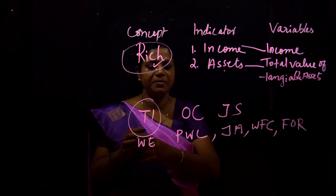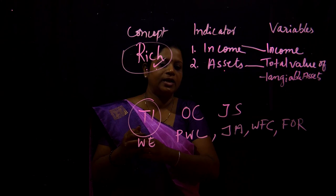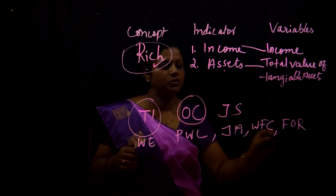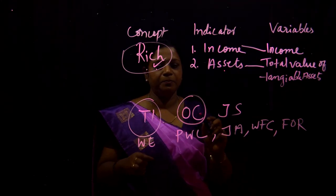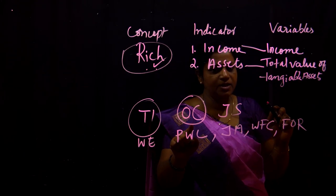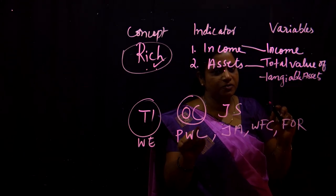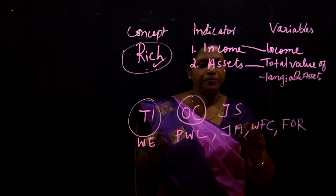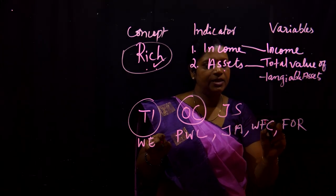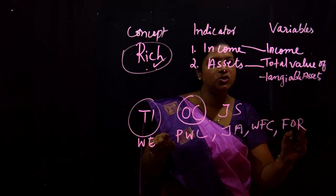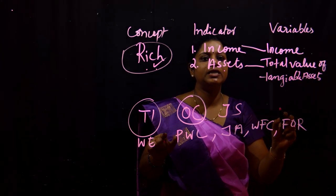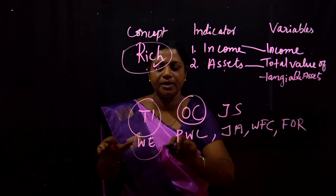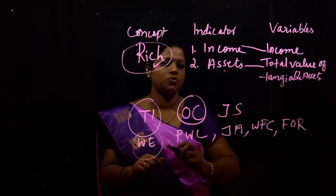Another theory developed by the researcher involves organizational commitment. Organizational commitment is defined through variables such as job autonomy, work-family conflict, fairness of reward, and work experience — these come under the category of work exhaustion. These are the variables used as indicators for developing a theory.